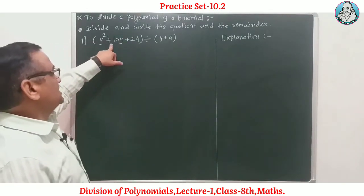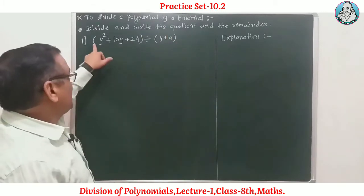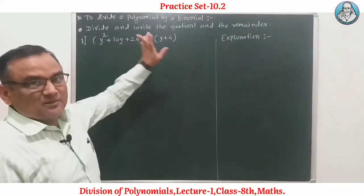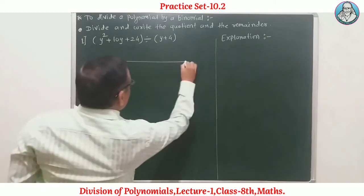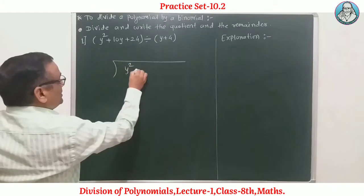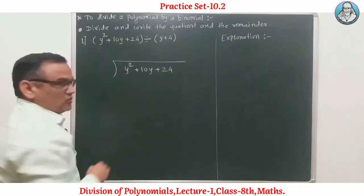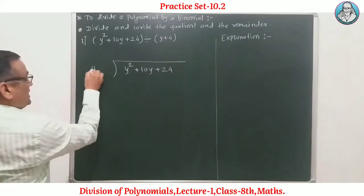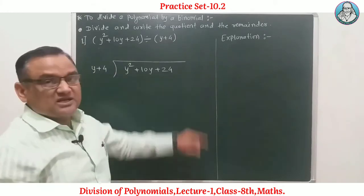Number 1 example: y² + 10y + 24 divided by y + 4. Here, a trinomial is given and a binomial is given. We have to divide the trinomial by the binomial. The dividend is y² + 10y + 24, and the divisor is y + 4.